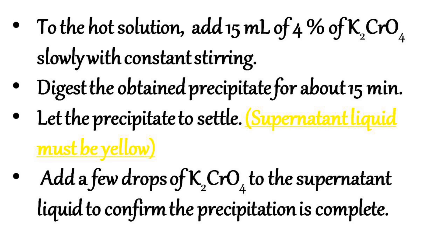Allow the precipitate to settle. The supernatant liquid must be yellow. Add a few drops of potassium chromate to the supernatant liquid along the sides of the beaker to test for completion of precipitation. If you observe any turbidity, the precipitation is incomplete. When there is no turbidity, the precipitation is complete.